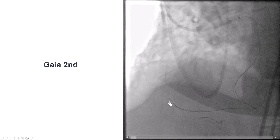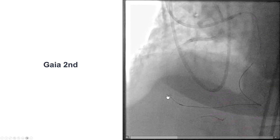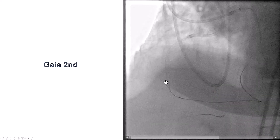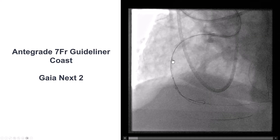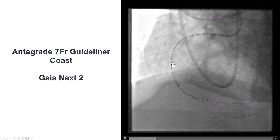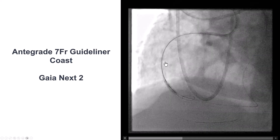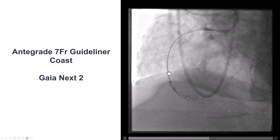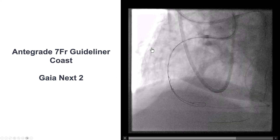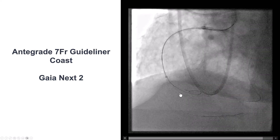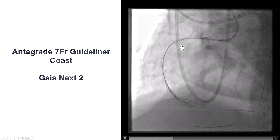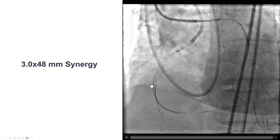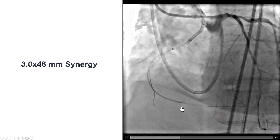Next, we took a Gaia second guide wire and advanced it retrograde. We were able to knuckle it and it advanced along the course of the vessel. We then used that retrograde wire as a marker for our antegrade equipment — advancing a Gaia next antegrade. We were able to deliver an antegrade 7 French guide liner, then did guide extension reverse CART. We had a fairly easy crossing with the retrograde Gaia into the antegrade guide extension. We externalized using an R350, and then decided to start stenting.